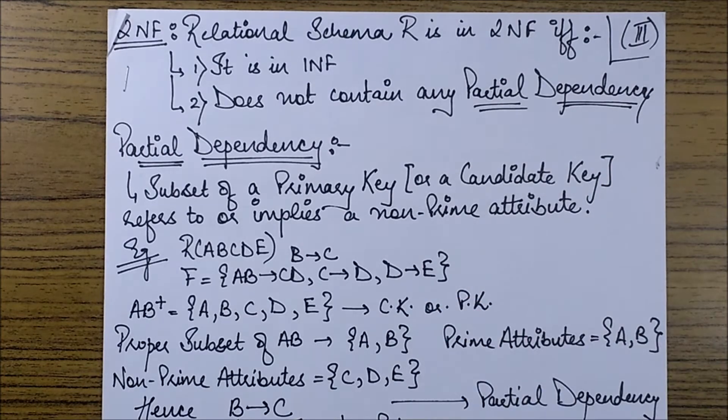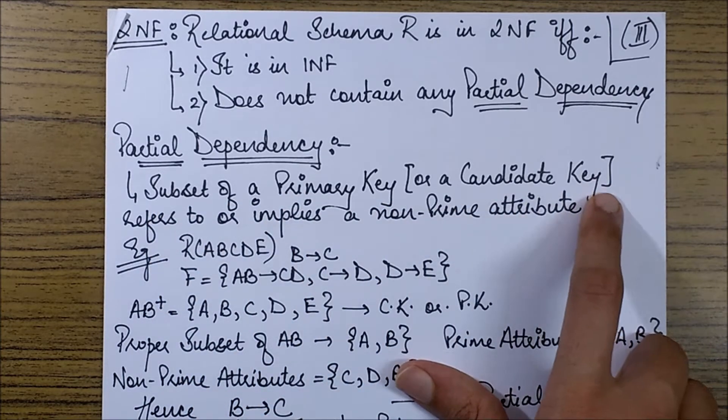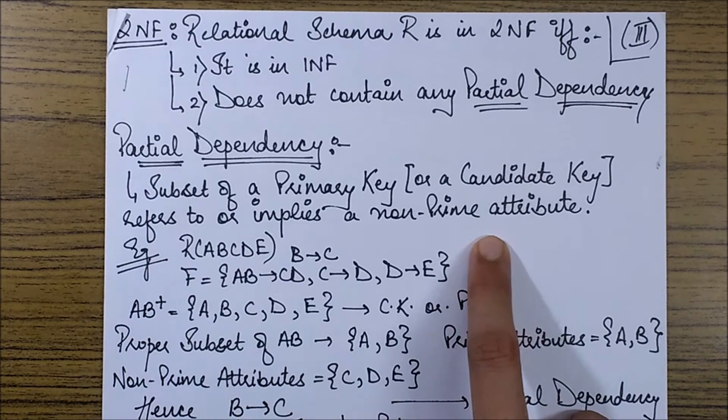Let's see what is a partial dependency. For a partial dependency we say that it is when a subset of a primary key or a candidate key refers to or implies a non-prime attribute.